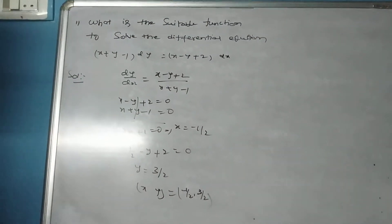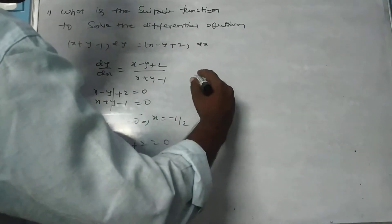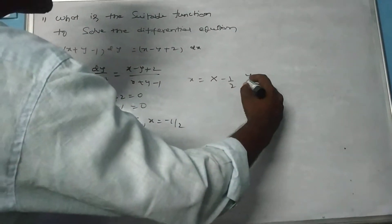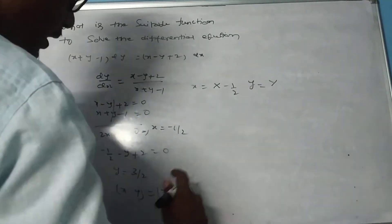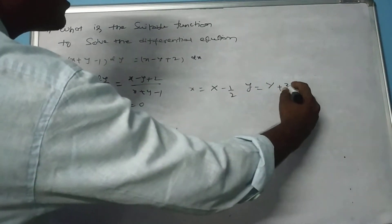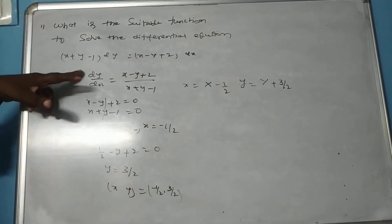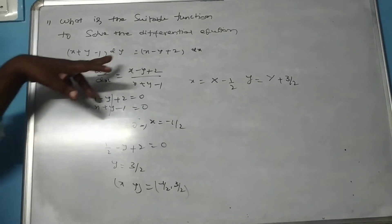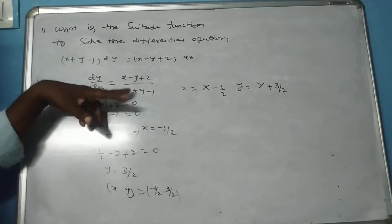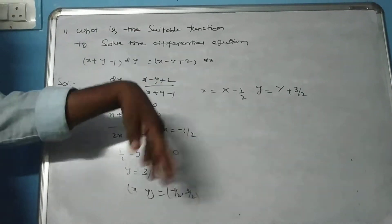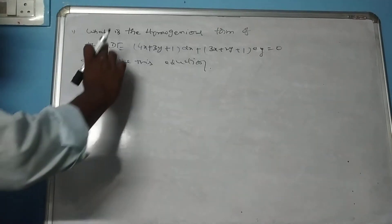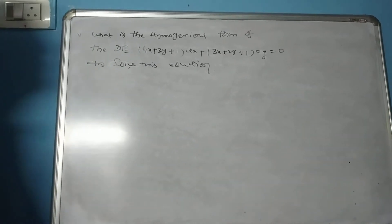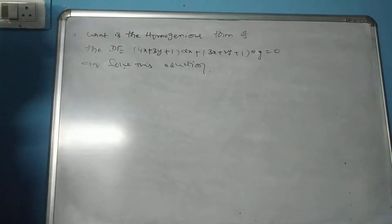To solve this equation, the suitable substitution is x equals capital X minus 1 by 2, and small y equals capital Y plus 3 by 2. On substituting into the differential equation, this reduces into the homogeneous form of the differential equation.